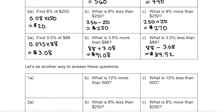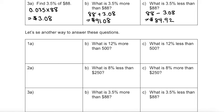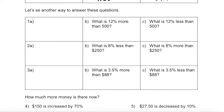So let's figure out another way to answer these questions. How can I figure out what 12% more than $500 would be? I don't want to do the same thing where I calculate what 12% is first and then add it or subtract it.